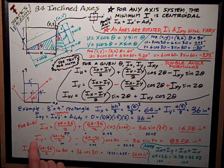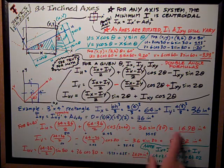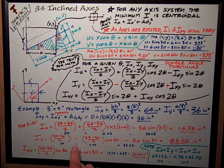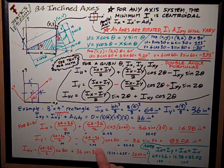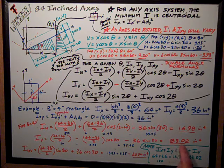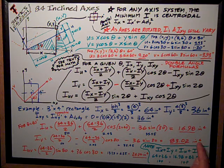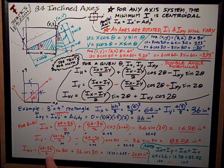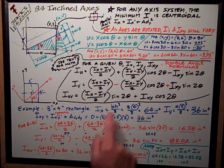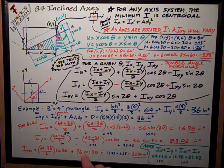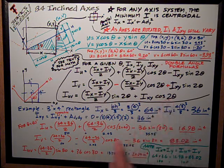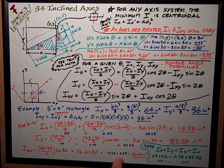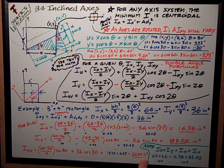I-v, just these same terms with the signs reversed, so it's 50 minus 2.43 plus 35.45 is 83.02 inches to the fourth. The product of inertia, u-v, is this number, 64 minus 36 over 2 times the sine of 80, just plugging into this formula, plus 36 cosine of 80. Works out to be 13.79 plus 6.25 is 20.04 inches to the fourth.